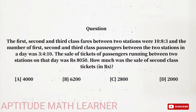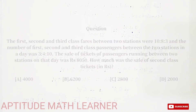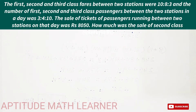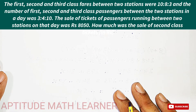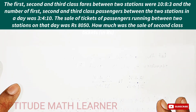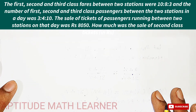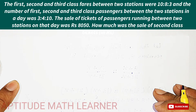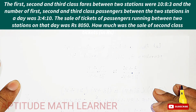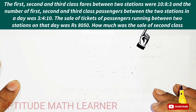We have to find out the amount collected from the sale of second class tickets. We will solve this using a shortcut method. We have the ratio for fares and the ratio for passengers, and we need to find the second class ticket revenue.